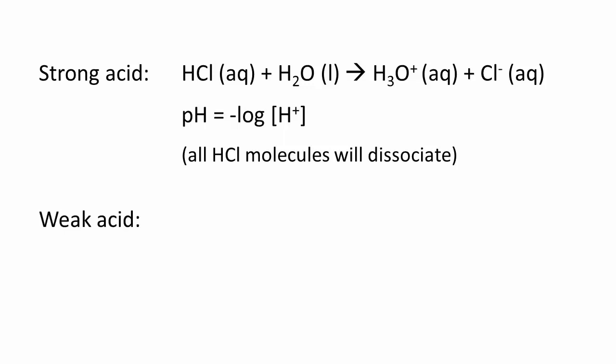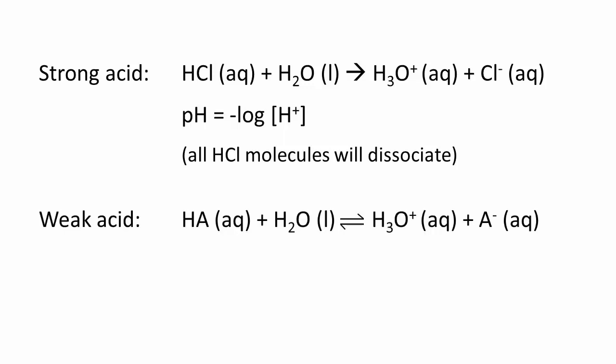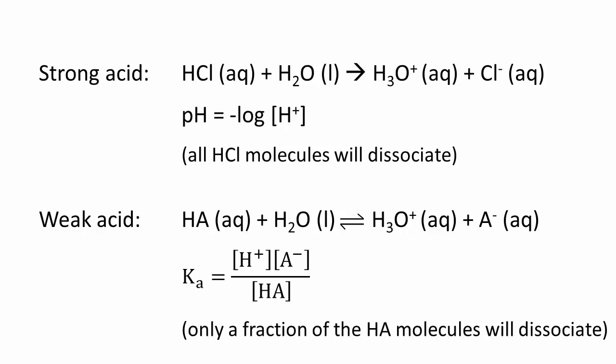A weak acid or weak base requires more thought. For a weak acid, we need the acid's dissociation constant, Ka, which is the equilibrium constant for the following reaction, where HA donates its proton to a water molecule acting as a base. As a liquid, the water does not appear in the expression for the dissociation constant. The weaker a weak acid becomes, the smaller its dissociation constant becomes.